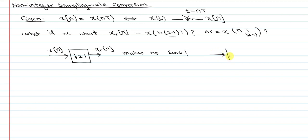Similarly, expanding a sequence by a non-integer factor makes no sense either. We cannot expand a sequence by a non-integer factor — we can't take a sample, take another sample, and insert perhaps 1.1 zeros in between. That does not work. So how do we accomplish a non-integer sampling rate?